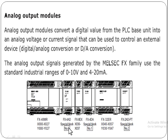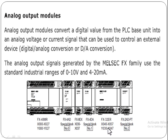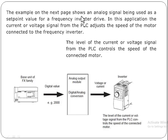These modules are numbered in sequence. The first module is allotted number 0, the second module number 1, and the third module number 2. The PLC is the base unit, and the first module is the analog-to-digital converter, the second is the digital-to-analog converter. Input extension modules and output extension modules can also be connected with the PLC.